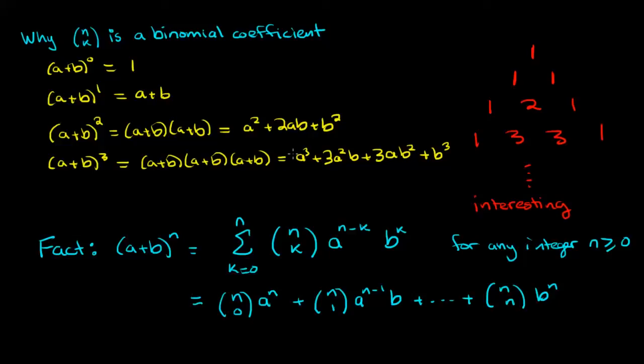There is one way to select 0 things from a collection of 3 things, so that's how you get this coefficient of 1. The next coefficient should be 3 choose 1 and indeed that equals 3, and we can see that the power of a has decreased by 1 and the power of b has increased by 1.